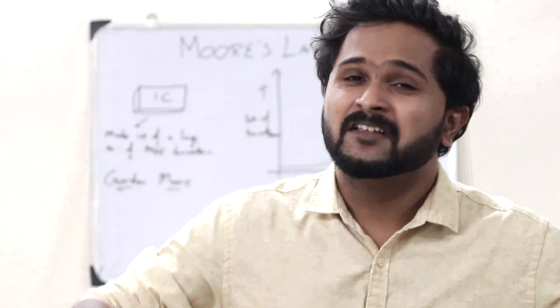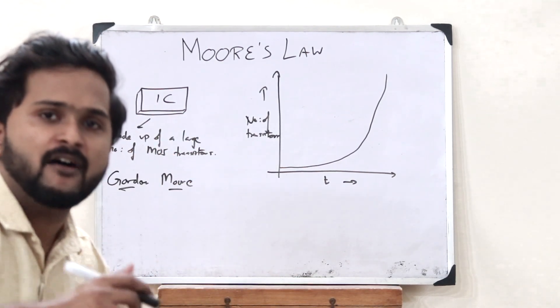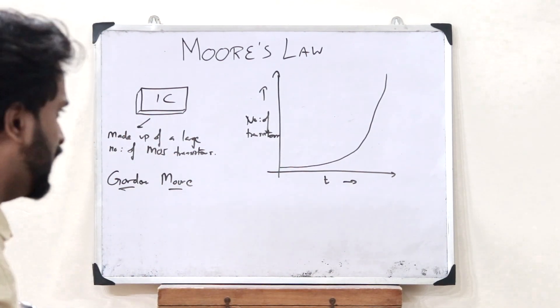As simple as that. Moore's Law simply states that the number of transistors inside an integrated circuit becomes double after every two years.